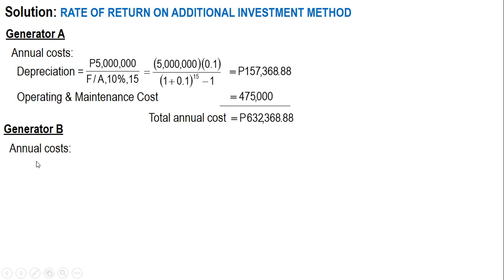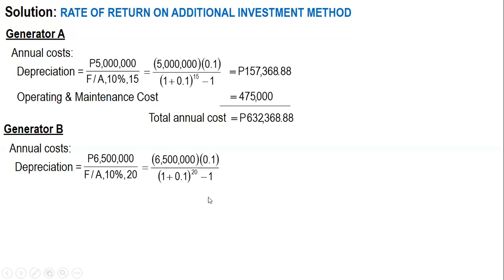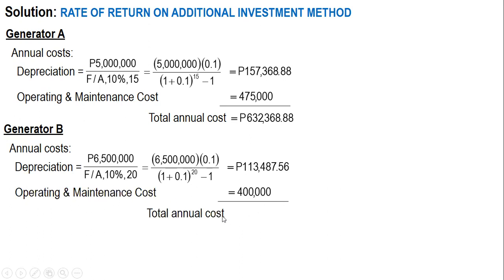For Generator B, depreciation is also computed using the sinking fund method: 6.5 million pesos at 10% over 20 years. Using the formula — first cost times i divided by (1 + i)^n minus 1 — the depreciation is 113,487.56 pesos. Adding the operating and maintenance cost of 400,000 pesos, the total annual cost for Generator B is 513,487.56 pesos.